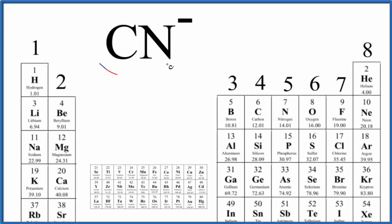Let's draw the Lewis structure for CN minus. This is the cyanide ion. With Lewis structures, the first thing we need to do is count the valence electrons.